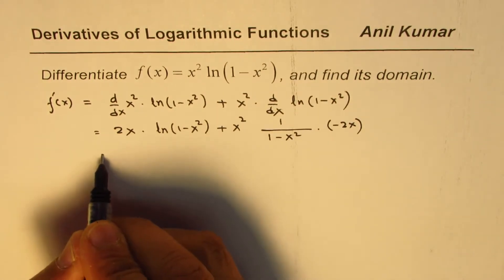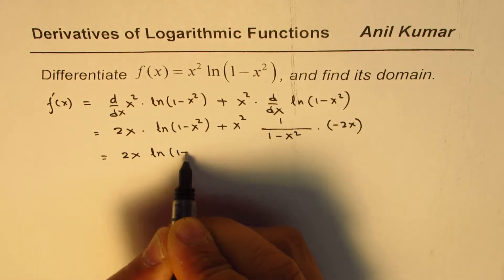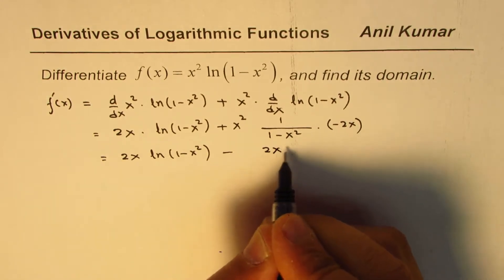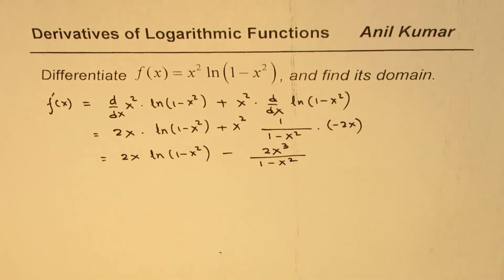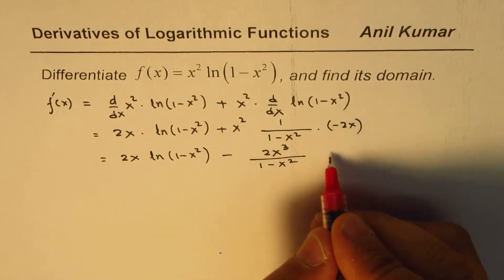Now we can simplify this a bit. We can write this as 2x ln 1 minus x squared, and here we get minus 2x cubed over 1 minus x squared. So that becomes the derivative. So that is one of our answers.